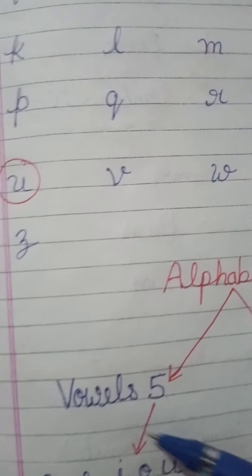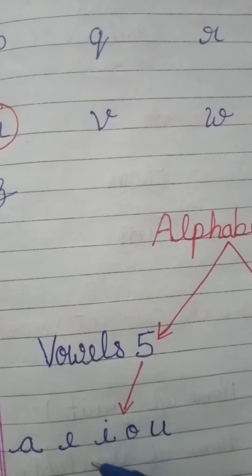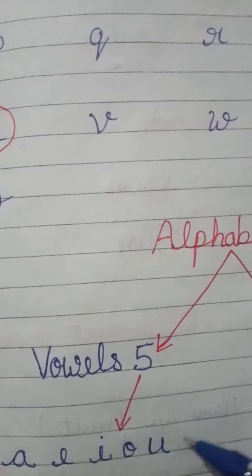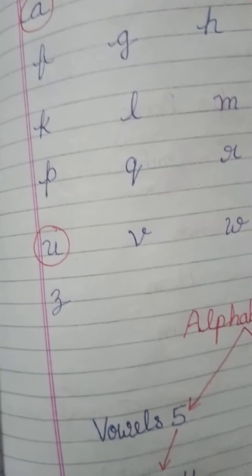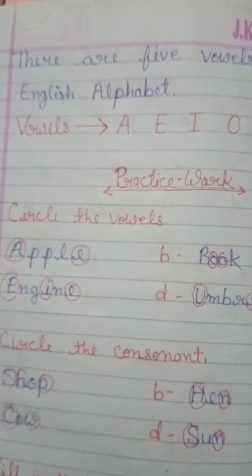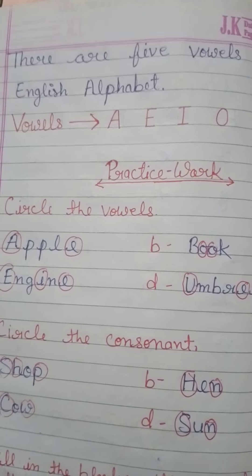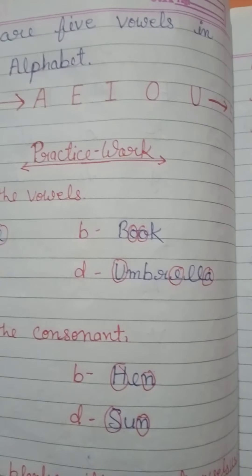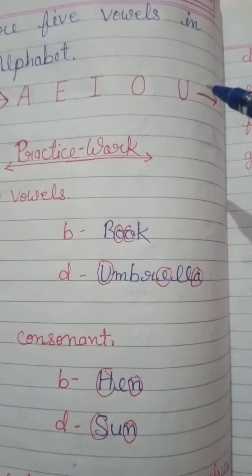And vowels are A, E, I, O, and U. So students, these are five vowels in English alphabet: A, E, I, O, and U.